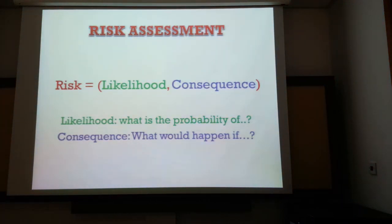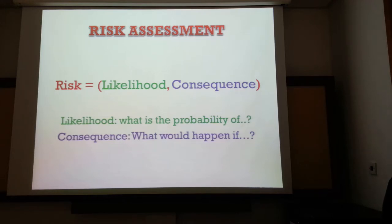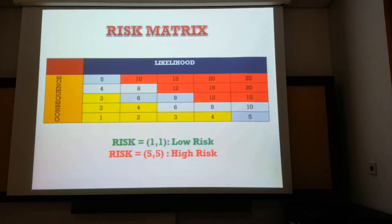We will be discussing risk in more detail in future lectures. But to touch upon it now: risk is a function of likelihood and consequence. When we speak of likelihood, we ask, what is the probability of? When we speak of consequence, we ask, what would happen if? A risk matrix defines likelihood and consequence — a risk with likelihood and consequence of 1 and 1 represents a low risk, while 5 and 5 represents a high risk.